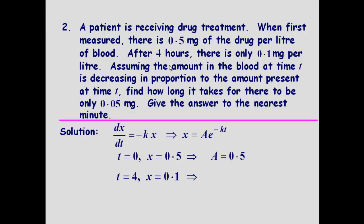We know also that after four hours, there's only 0.1 milligrams per litre. So x is 0.1 when t is 4. So that will enable us to find k.